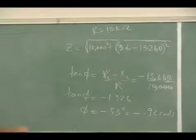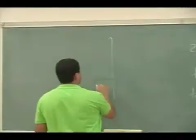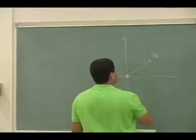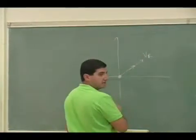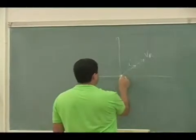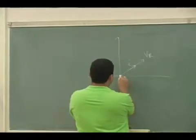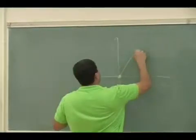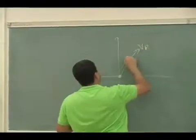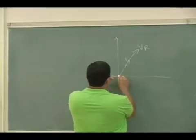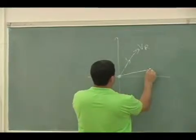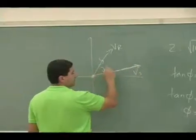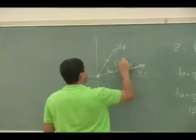Okay, so here is what that means picture-wise, phasor-wise. It means the voltage of the resistor and the current are in phase, but the voltage of the source is behind something like this, is behind by about negative 53 degrees.